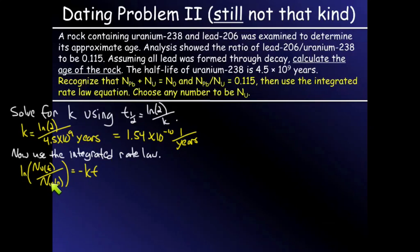Now the integrated rate law is going to be, because it is uranium-238 that is decaying, the natural log of the ratio of the number of radioactive nuclides of uranium at time t over the number of radioactive nuclides of uranium initially at time 0 is equal to negative kt. Now, I don't know these values, but I do know the ratio of lead-206 to uranium-238 at time t.